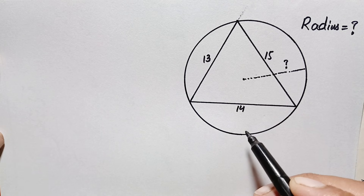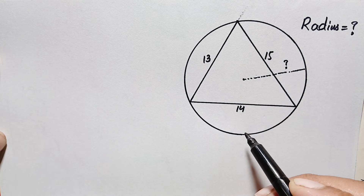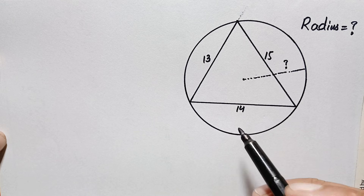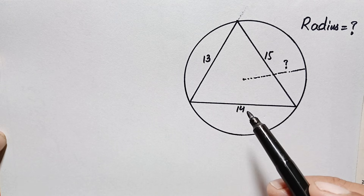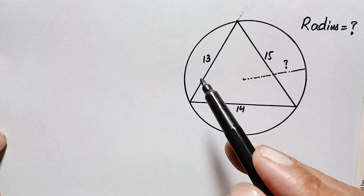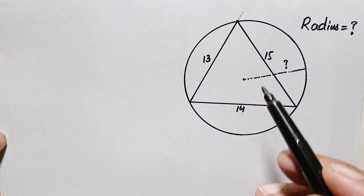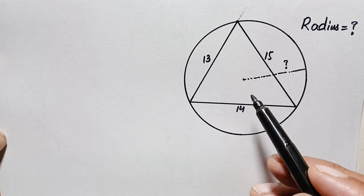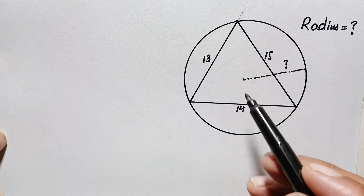Hello everyone, you are welcome. Today we have a very interesting geometry math problem. We have given a circle with a scalene triangle inside the circle whose three different side lengths are given. Our target is to find out the radius of this circle.